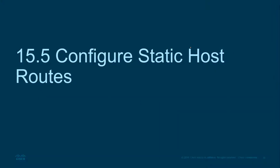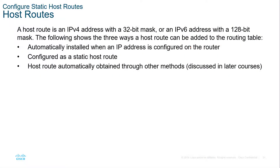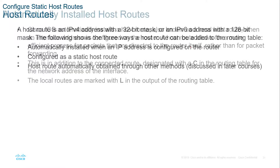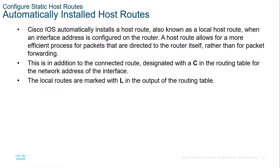Moving forward — configuring static host routes. This is more for when we're mapping single hosts. A host route is automatically installed when an IP address is configured on the router. Host routes can also be automatically obtained through other methods we've already discussed. With Cisco IOS, automatically installed host routes are known as local host routes. These are distinguished with an L in the routing table. Directly connected routes are shown as C, and local routes are shown as L.